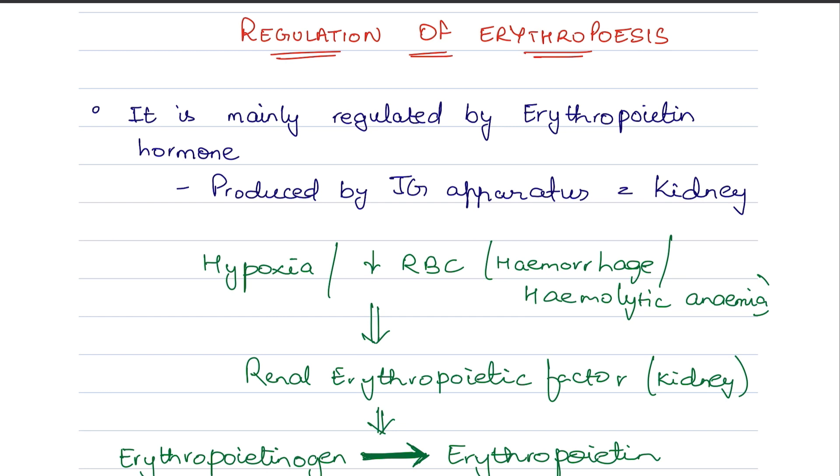So first of all, it is mainly regulated by the hormone erythropoietin. This is the key hormone of erythropoiesis. The whole regulation of erythropoiesis is dependent on it. Now, where is erythropoietin produced? It is made by the juxtaglomerular apparatus of kidney cells.